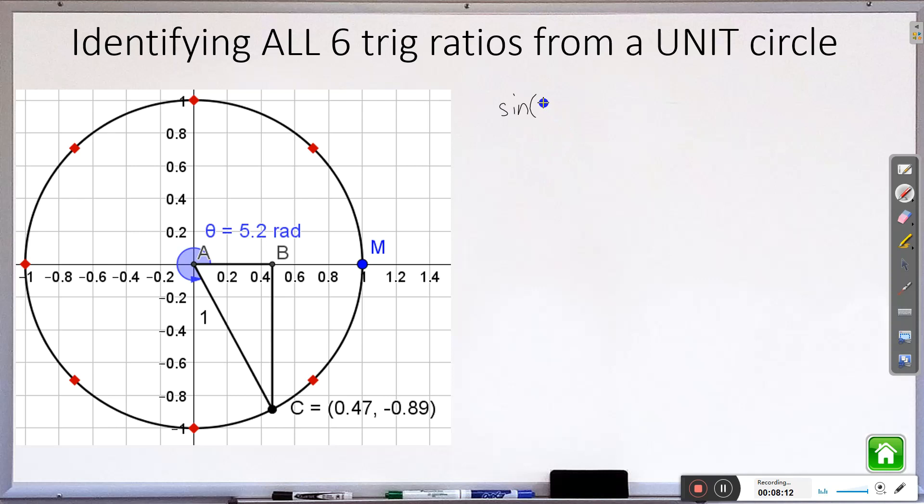So sine of the angle is 5.2 so we now know that sine is just the y value. It will be negative 0.89. Cosine of 5.2 is just the x value. So in this case, 0.47.